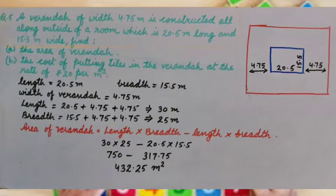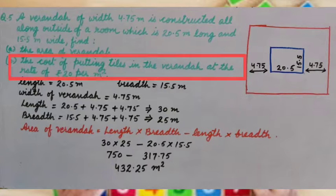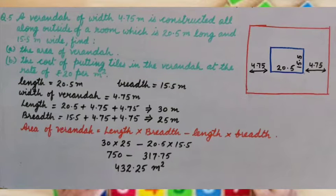A veranda of width 4.75 meter is constructed all along outside of a room which is 20.5 meter long and 15.5 meter wide. Find: part A, the area of veranda; part B, the cost of putting tiles in the veranda at the rate of rupees 20 per meter square.